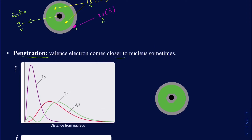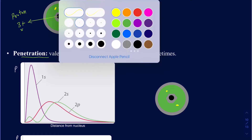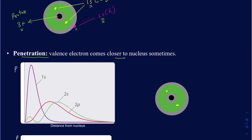Using the same lithium example, sometimes the 2s electrons may actually go closer to the nucleus. If they do go close to the nucleus, they will experience the same type of attractive force as the electrons in the 1s subshell. But that happens very rarely — there is only a small probability of that happening.